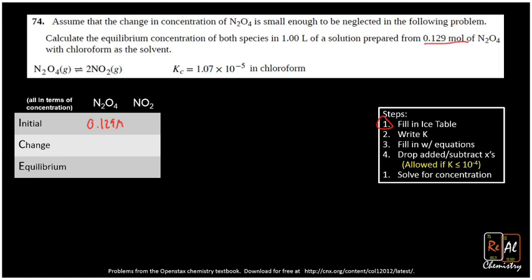And the initial concentration of N2O4 is 0.129 molar. We know that because it tells us there's 0.129 moles, and it tells us that it's in one liter. So remember, molarity is moles over a liter. And in this case, 0.129 over 1 equals 0.129. So you might confuse 0.129 for moles and accidentally just plug it straight in. But you actually have to calculate the molarity. It just happens to be the same because there's a one liter solution.